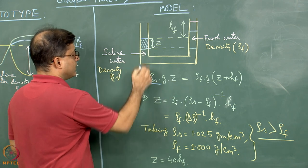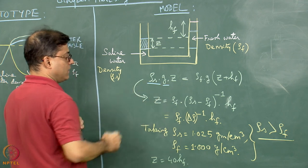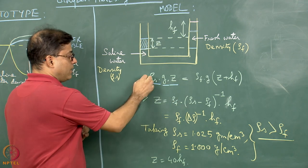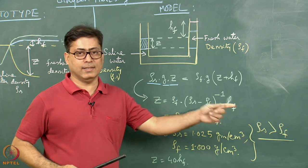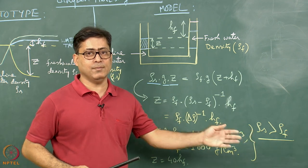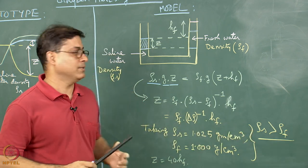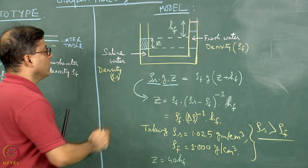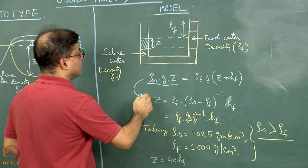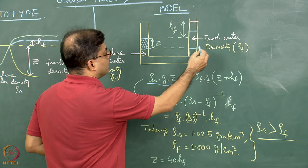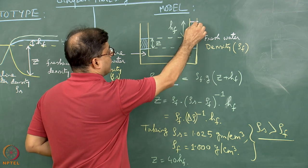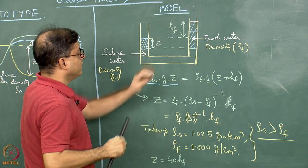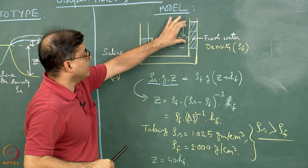I can write the pressure exerted by the saline water on this line: it is the density of the saline water multiplied by the acceleration due to gravity multiplied by height. For why this expression comes, you can click the linked video where this has already been described. On the right-hand side, the pressure exerted by the fresh water column is given by z plus hf.